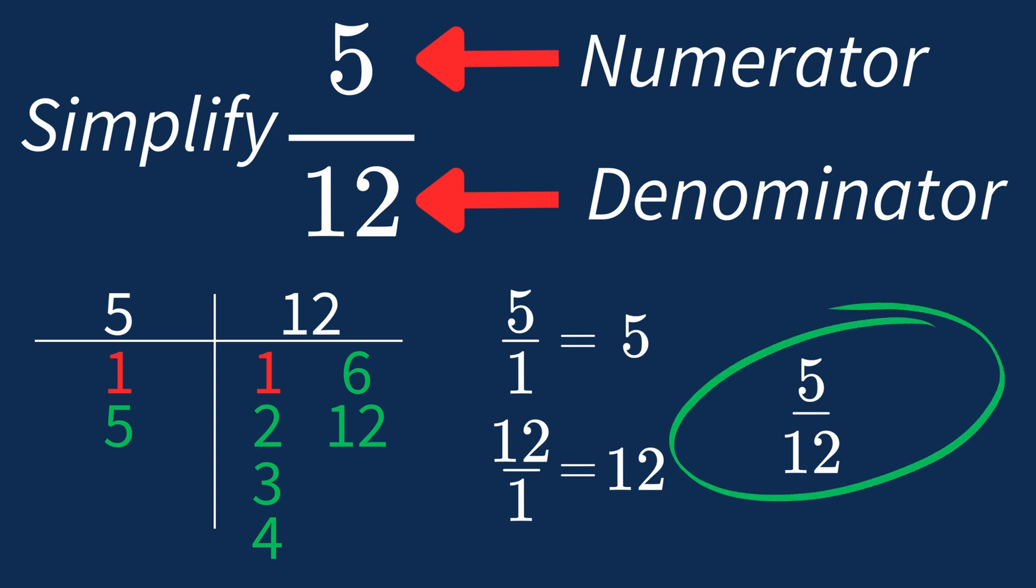This shows us that 5 over 12 is already in its simplest form. There's no larger number that can divide both parts evenly. So 5 over 12 is an irreducible fraction, meaning it's as simple as it can get.